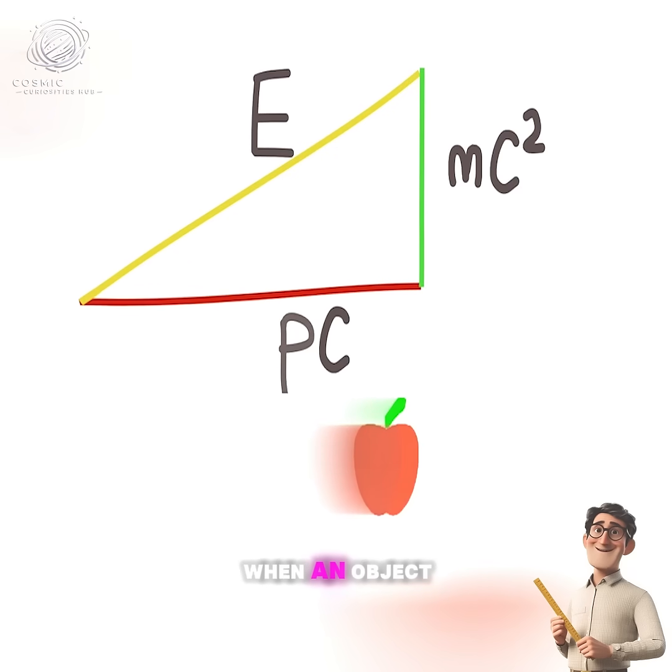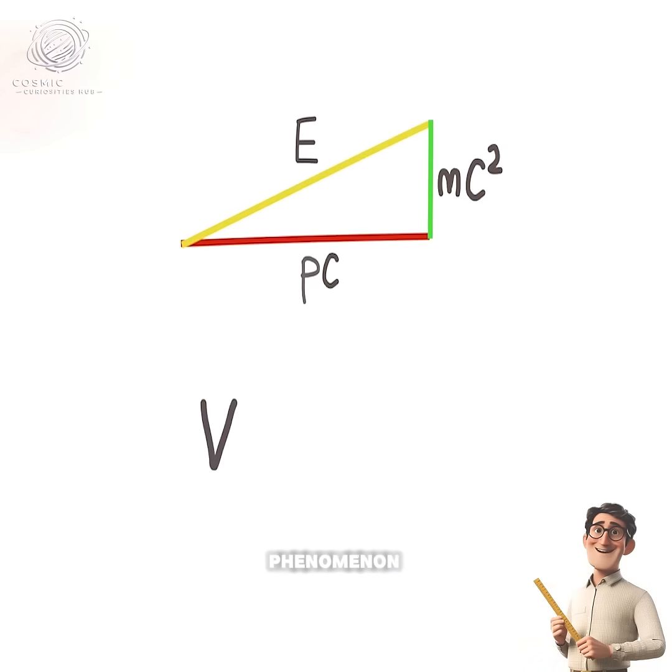When an object approaches the speed of light, its rest mass energy is almost negligible. To understand this phenomenon, we can express the object's velocity as v = c · (pc/E).